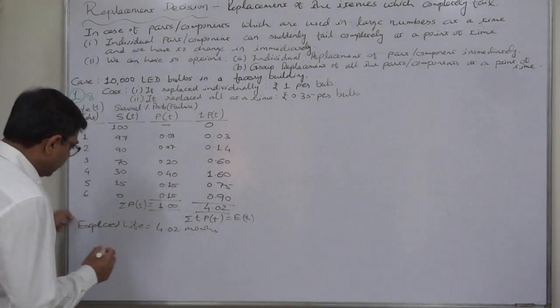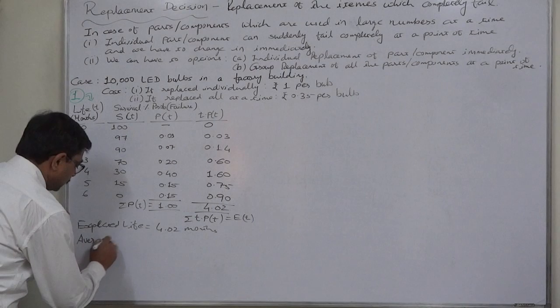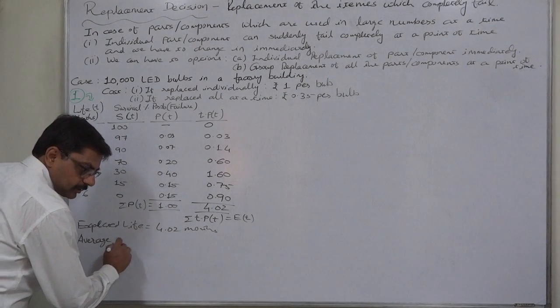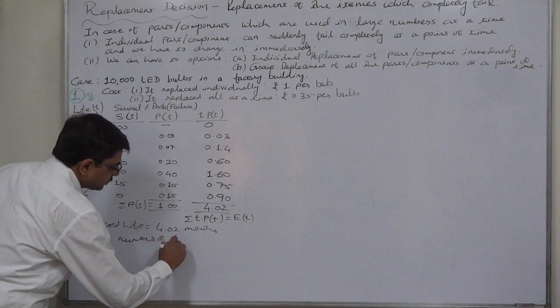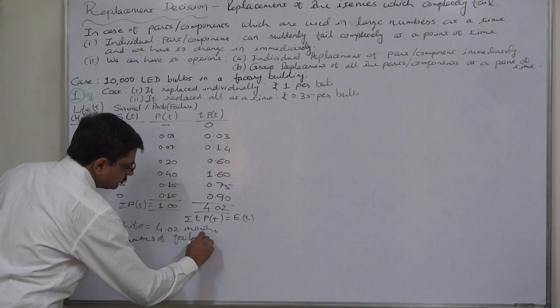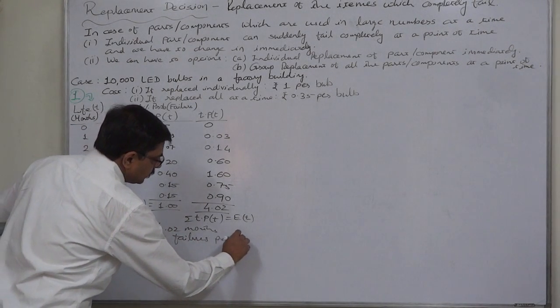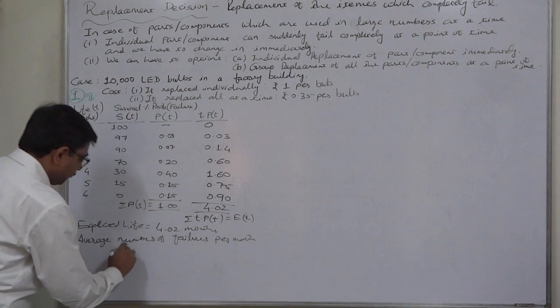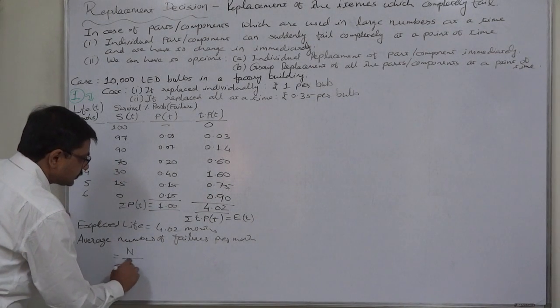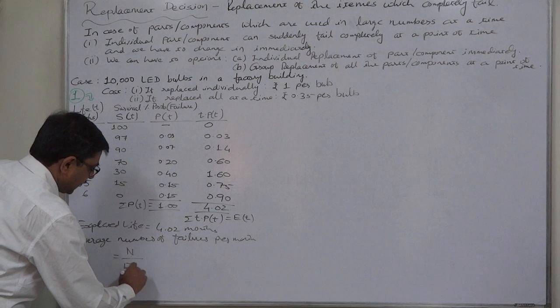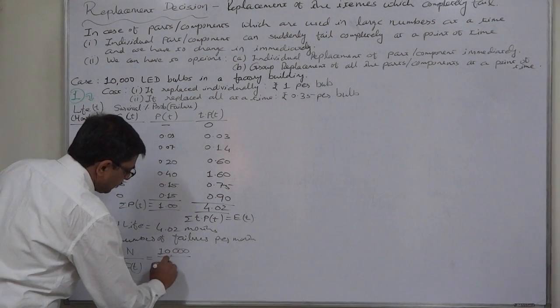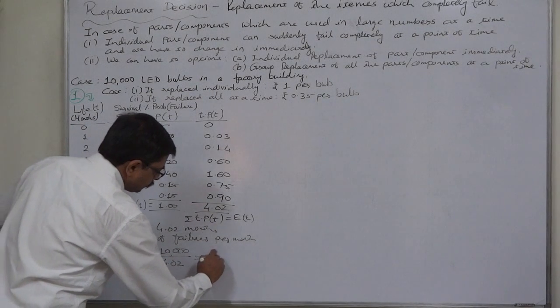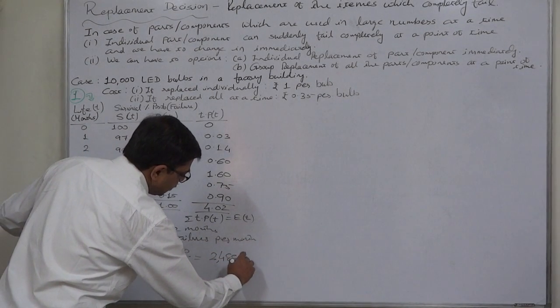Number of failures per month: that will be total number of bulbs divided by expected life. That will be 10,000 divided by 4.02 equals to approximately 2,488.